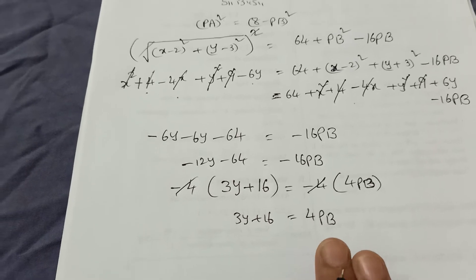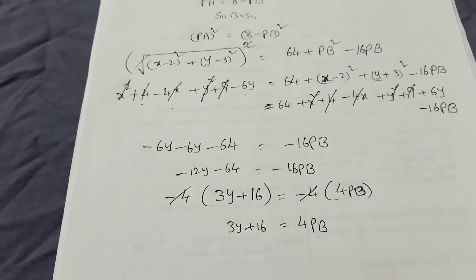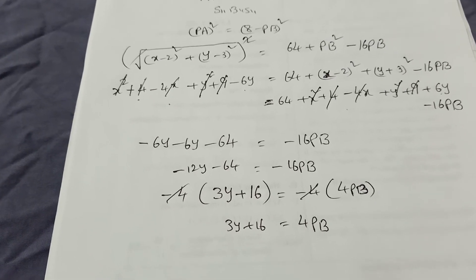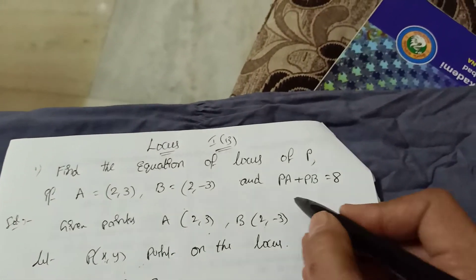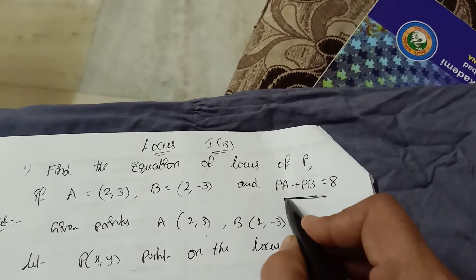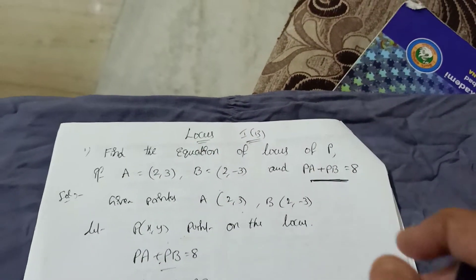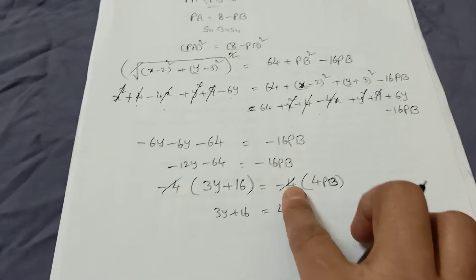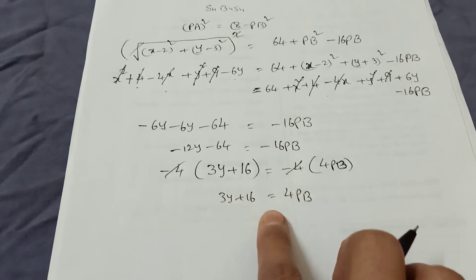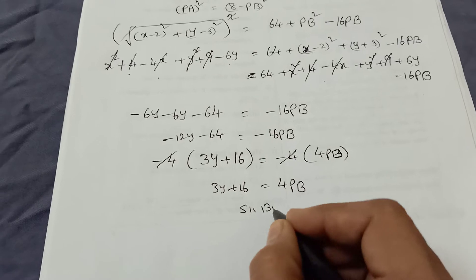This is not the final answer because PB is still there — the equation must be in terms of x and y only. That is why we square both sides again. For this type of problem, remember: you must do squaring on both sides two times.